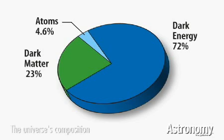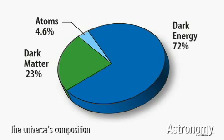So if ordinary matter is only about 5% of the universe, what's the other 95%? Well, about 23% is something called dark matter. The remaining 72% is a mysterious pervasive force called dark energy.